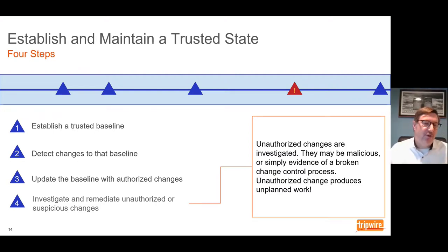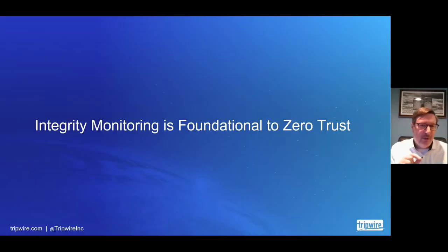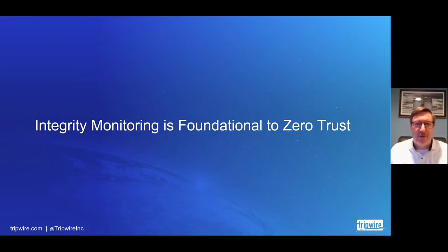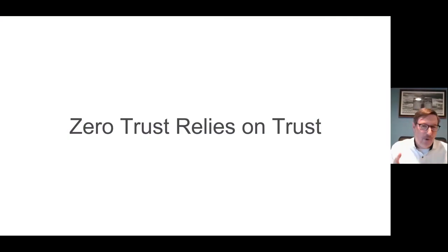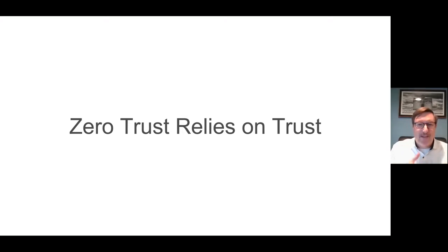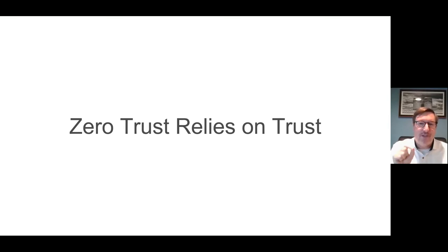That brings us to the connection point in this conversation: integrity monitoring is foundational to zero trust. That's really what we're here to talk about — that foundational component for a successful zero trust architecture. It seems ironic, but it's an important statement: zero trust relies on trust. A successful implementation of a zero trust architecture depends on establishing trust. In order to make access decisions, trust has to be established for both the requester and the resource being requested. More importantly, trust has to be established for the underlying systems supporting that zero trust architecture.